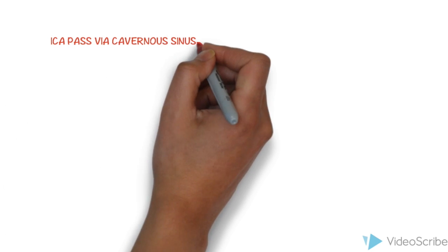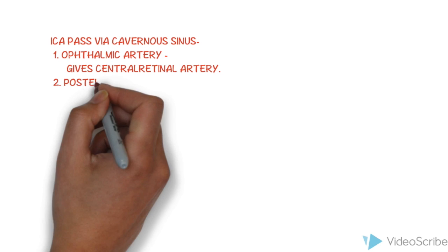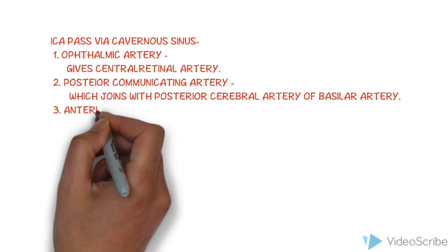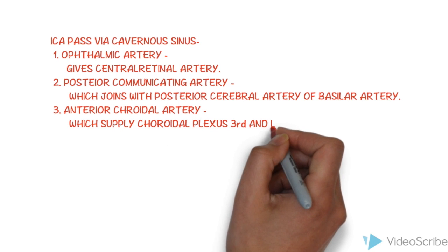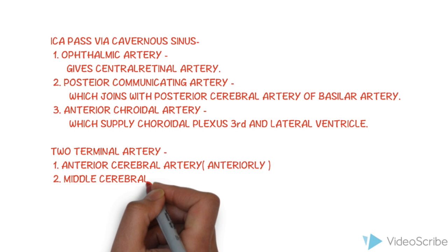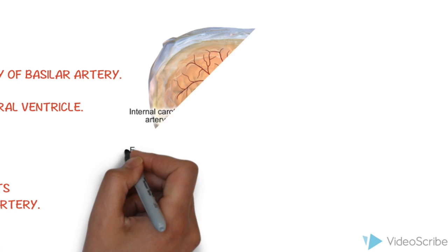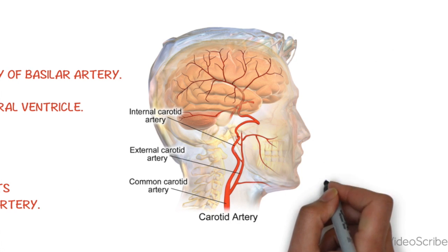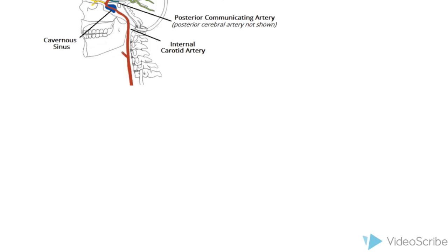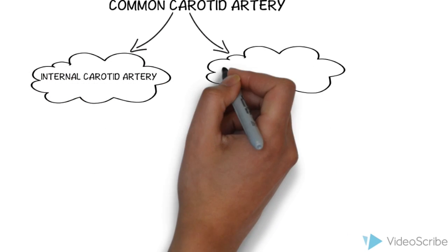As the internal carotid artery passes through the cavernous sinus, it gives rise to the following arteries: the ophthalmic artery and the posterior communicating artery, which joins the right and left anterior cerebral artery. In this diagram, you can appreciate the internal carotid artery and its branches. We know that the common carotid artery branches into the internal carotid artery and the external carotid artery.